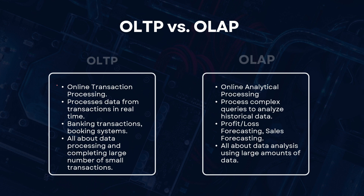OLTP stands for Online Transaction Processing. It processes data from transactions in real-time. Real-time transactions include banking transactions like depositing or withdrawing money, or booking systems like flight tickets, movies, or concerts. It's all about completing a large number of small transactions — for example, hundreds or thousands of deposits and withdrawals all happening at once.